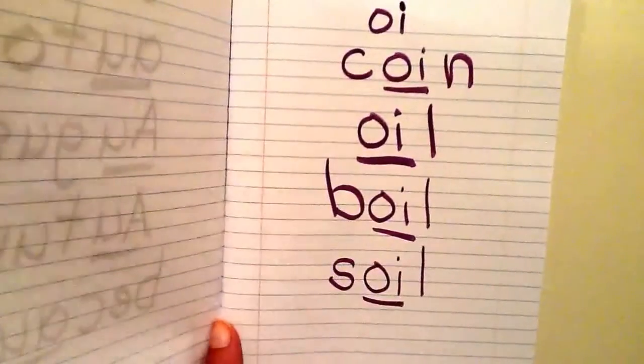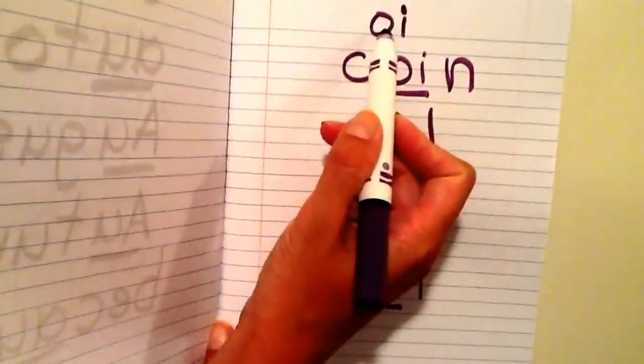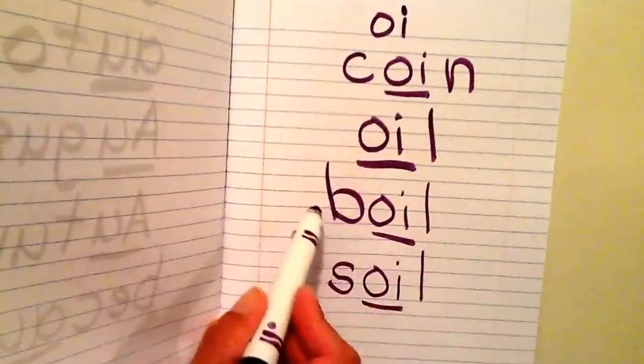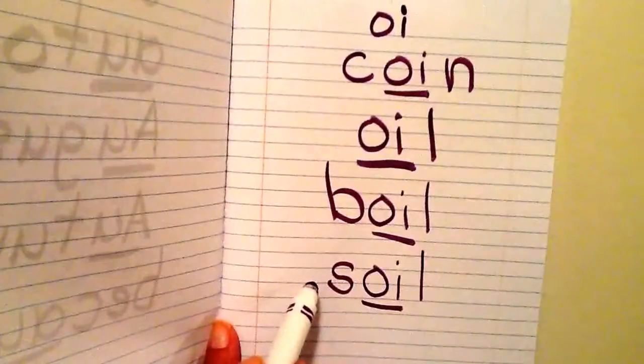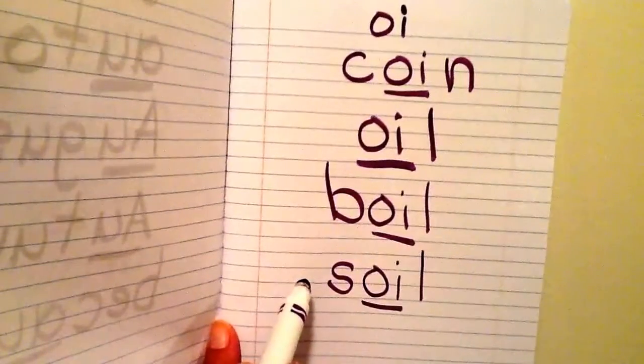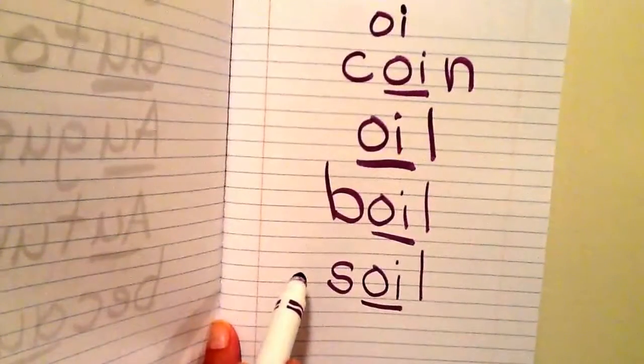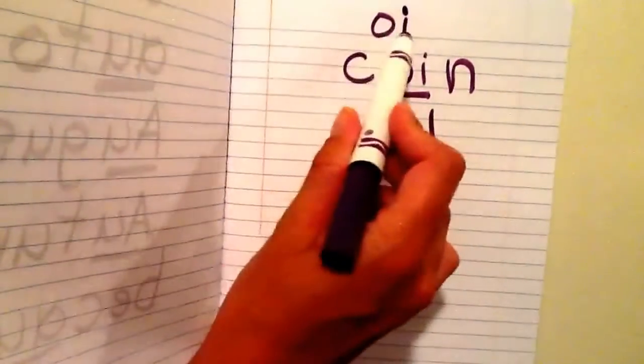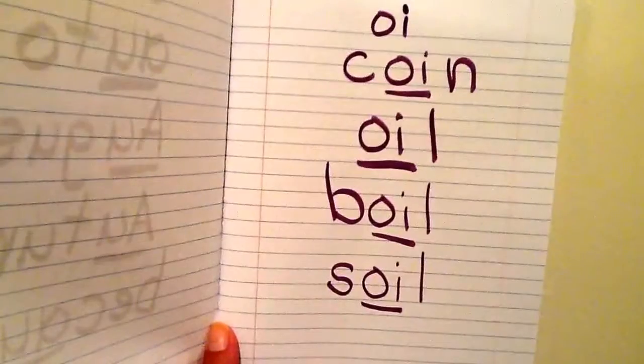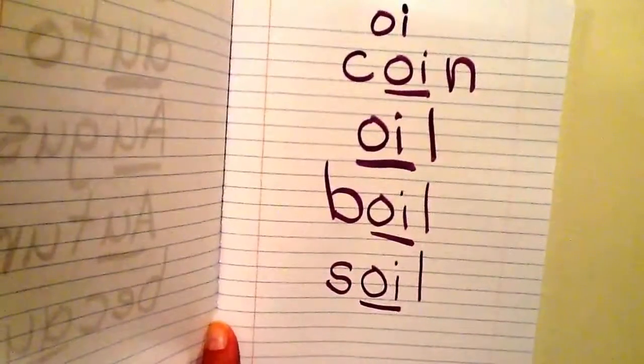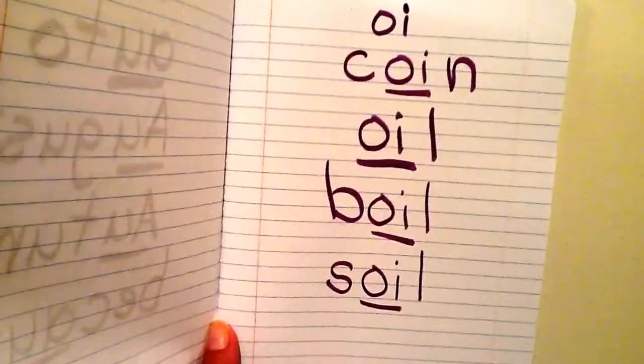Let's read through our list of words that has O I as oy. Coin, oil, boil, and soil. What I want you to remember today is that one of the ways to make the oy word pattern is O I. And in your reading and writing if you find words that have OI as oy, you may add them to your word study notebook.